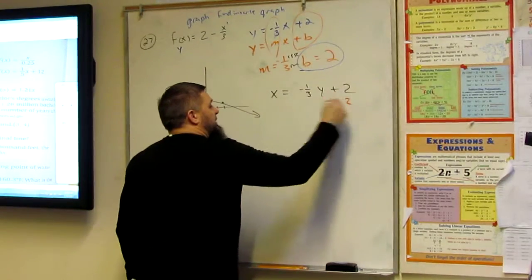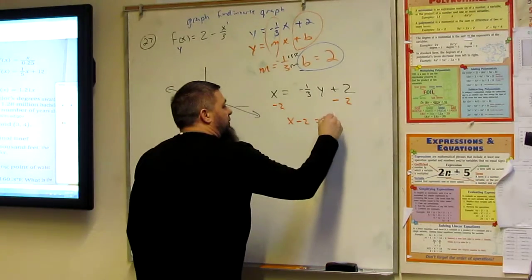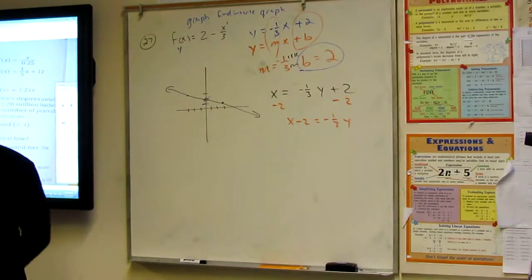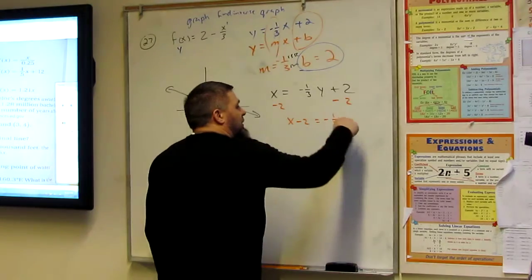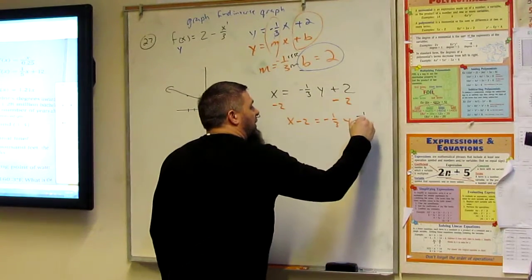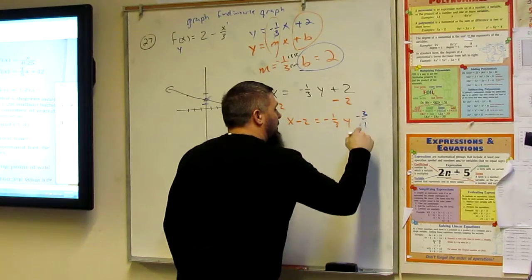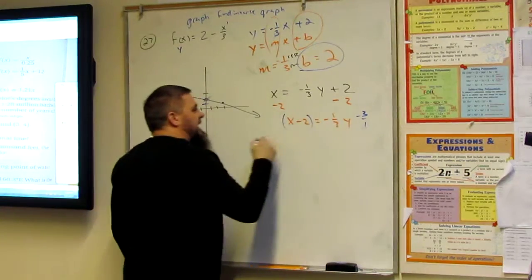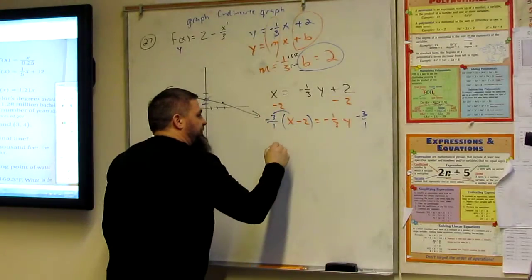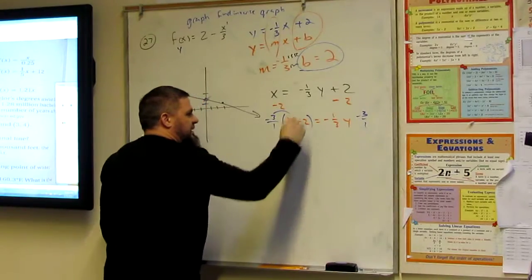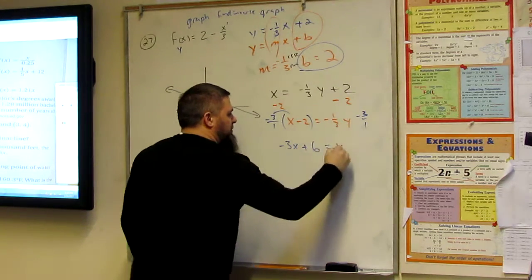So, I minus 2. I've got x minus 2 equals negative 1 third y. How do I get rid of that negative 1 third? Multiply by what? The reciprocal. Negative 3 over 1, right? Because I've got to make it positive. So, that means everybody on the block gets that, 3 over 1. So, we've got negative 3x plus 6 is equal to y.